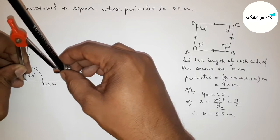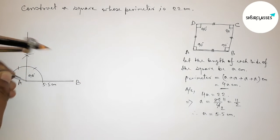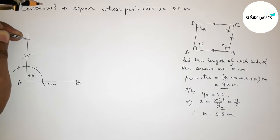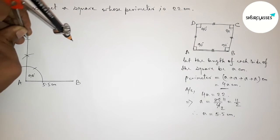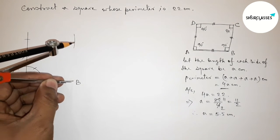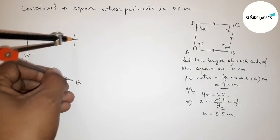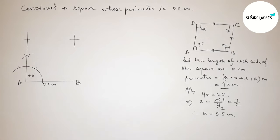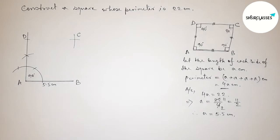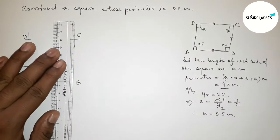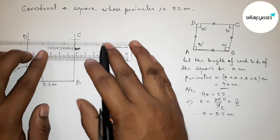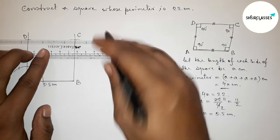Now, taking the length AB = 5.5 centimeters, cut the ray at D along the 90-degree direction from A. Then, with the same length, draw arcs from B and D to locate point C where the arcs intersect.